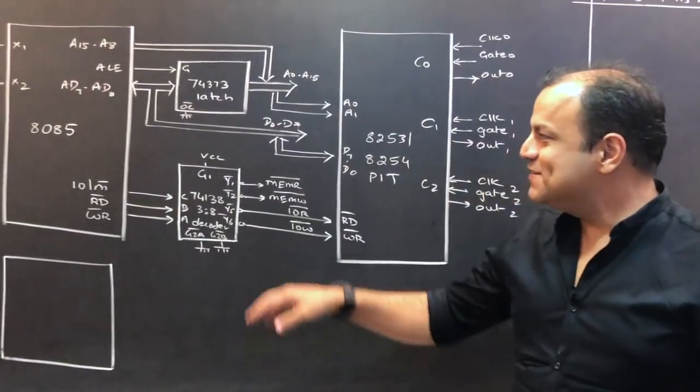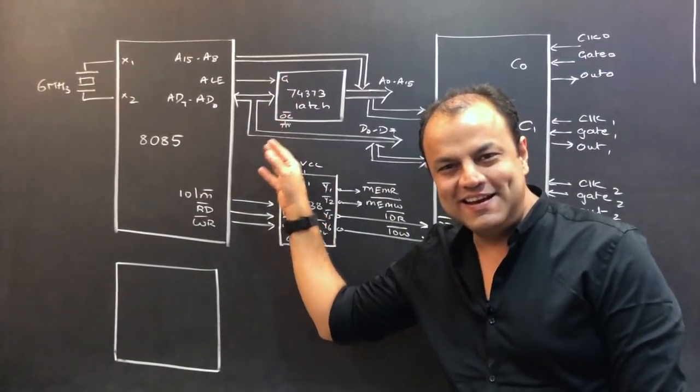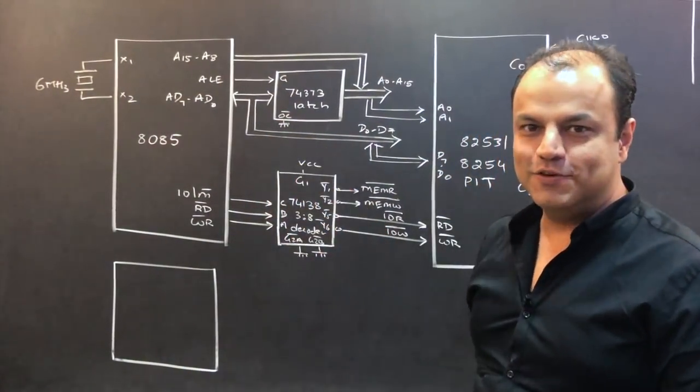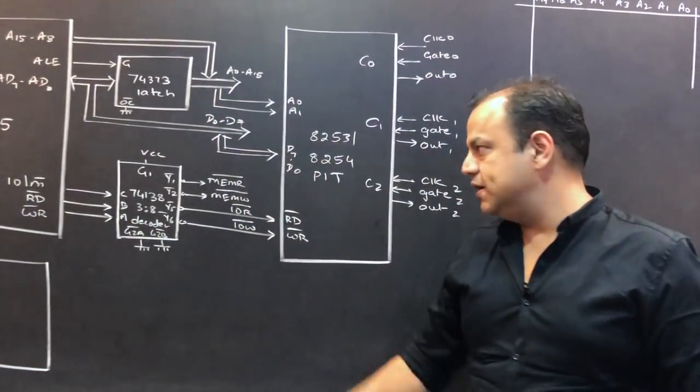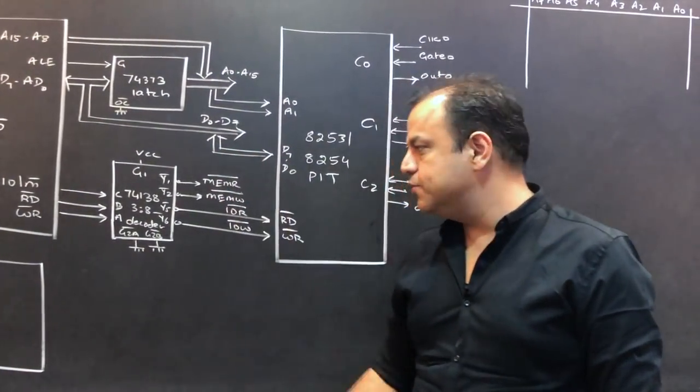Anyway, so in the interfacing, first I'm going to teach you how to separate address bus and data bus, the demultiplexing of address data buses. Then from the address bus, you give A0 to A1 lines. From the data bus, you give D0 to D7.